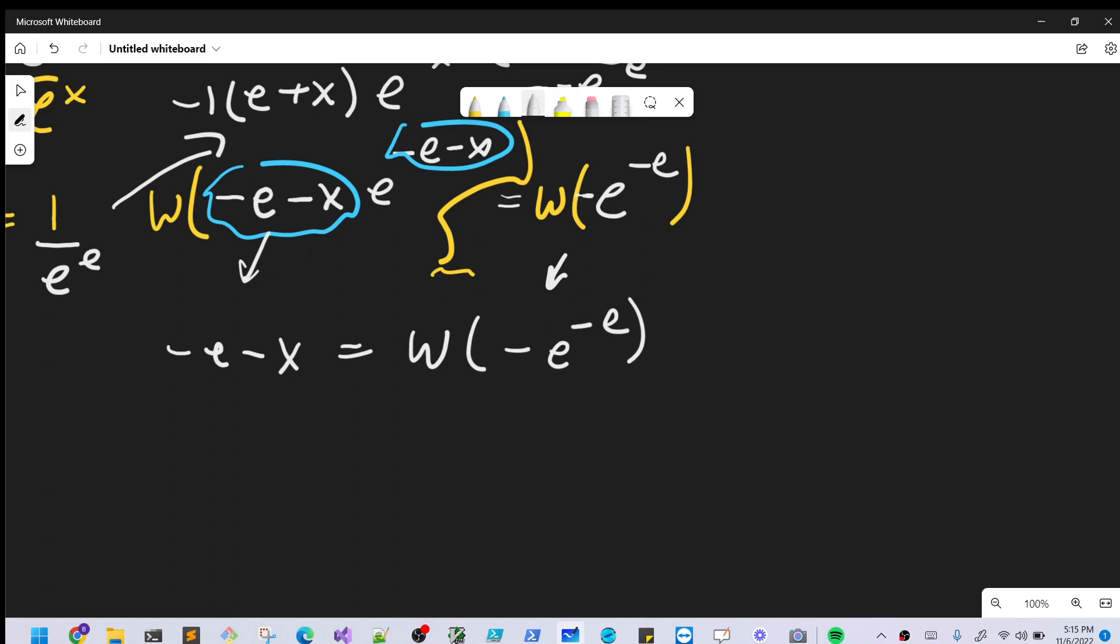And we're going to be left with -e-x equals Lambert W(e^(-e)). You almost think you could use Lambert W and simplify this right part, but you can't quite do it because this is a -1 and this is a -e, so not quite. So then we just want to solve for x, so to do that we're going to add an e to both sides.